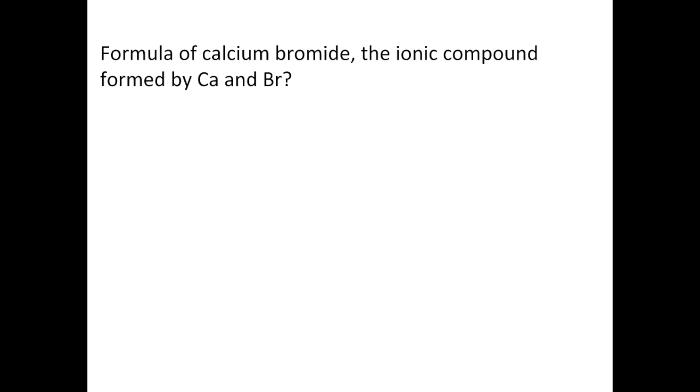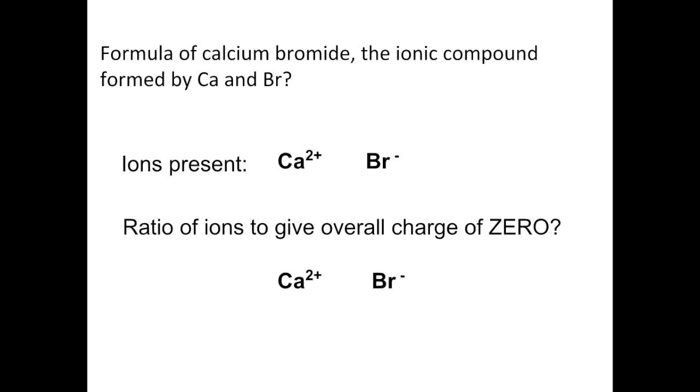So what's the formula of calcium bromide? That's the ionic compound formed by calcium and bromine. So the first thing we need to do is work out which ions would we have present? Well we're going to have the Ca2+ ion and the Br- ion. And then we need to work out what ratio of ions is going to give us an overall charge of zero. In other words, we need to cancel out the overall charge.